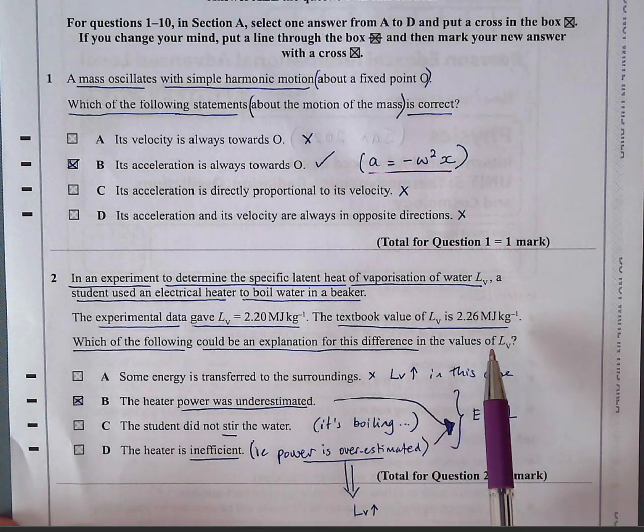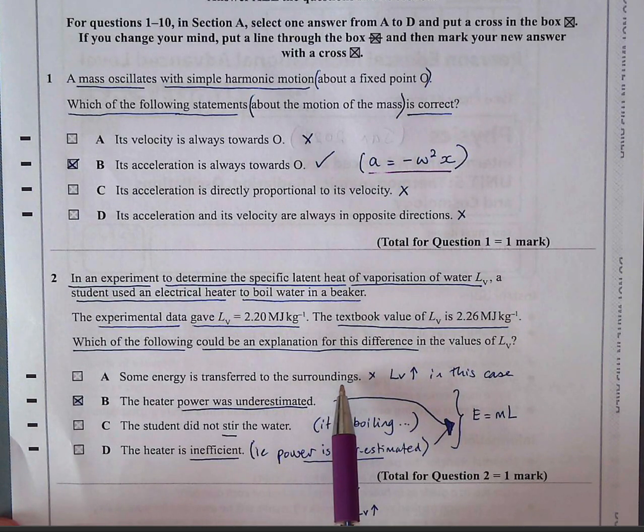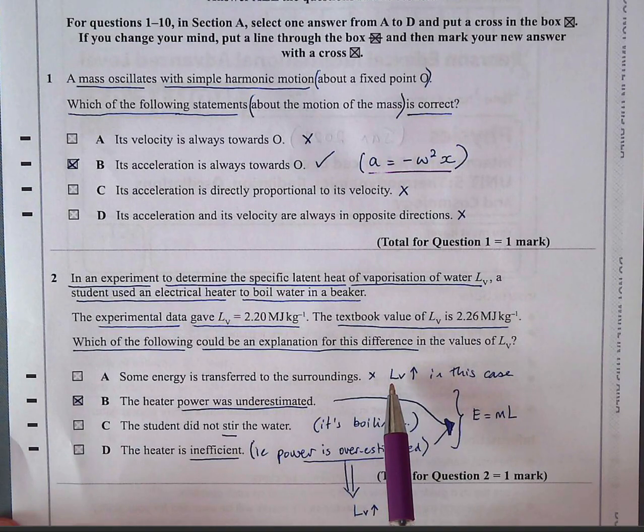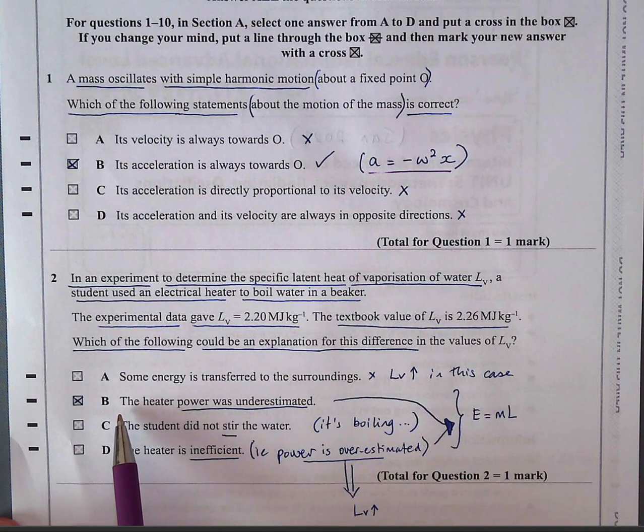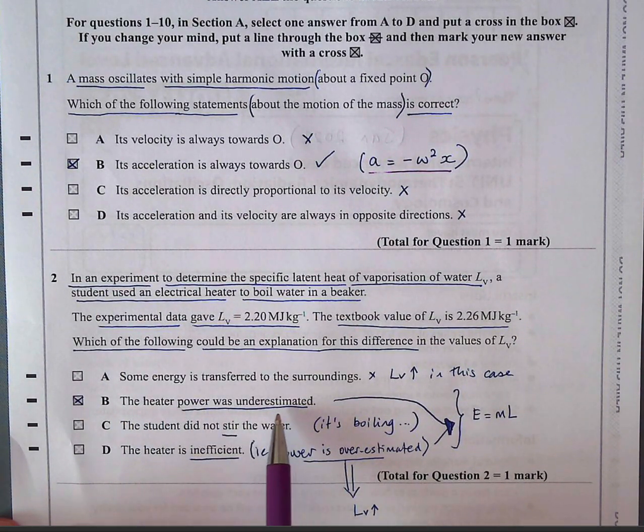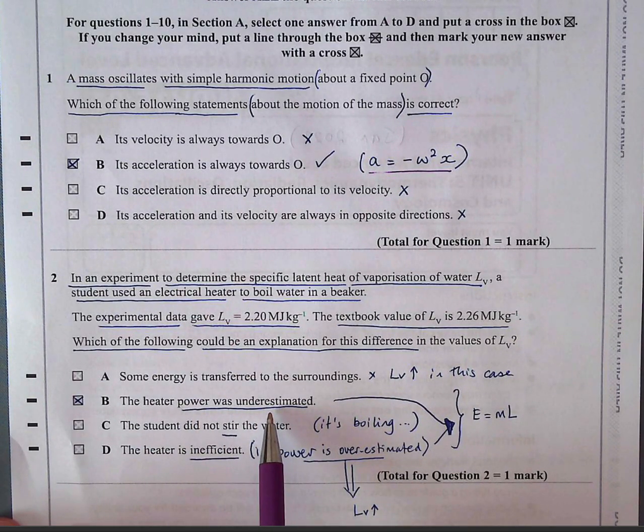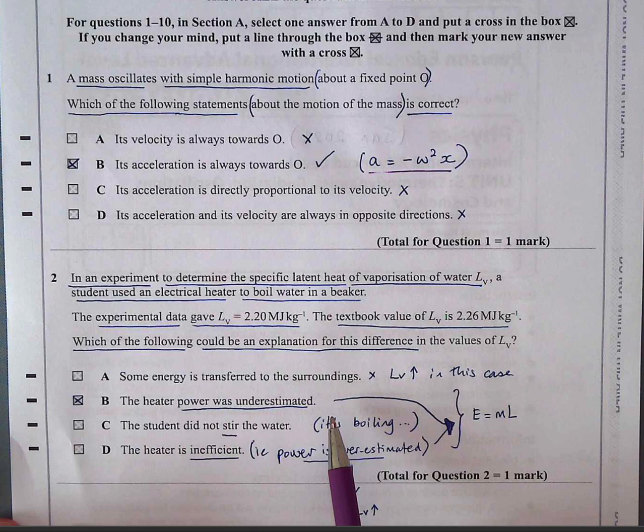Which of the following could be an explanation for this difference? Some energy is transferred to the surroundings. Well, if some energy is lost, then the calculated value, the energy you input, will be greater. So the value you calculate would be higher in this case. So A is incorrect. B is the correct answer. It says the heater power was underestimated. So if the power is underestimated, it will give you the correct error, the error that you're looking for. It will give you a latent heat of vaporization which is too low.